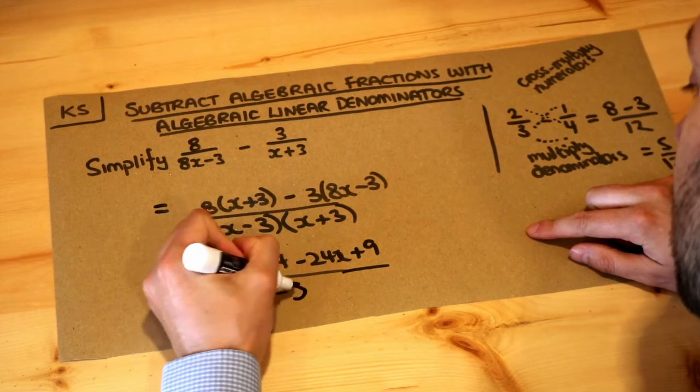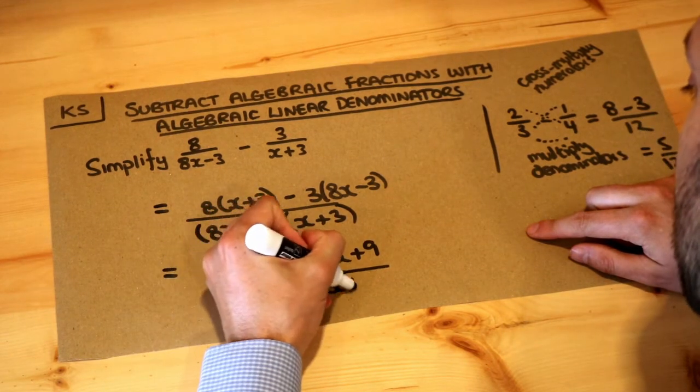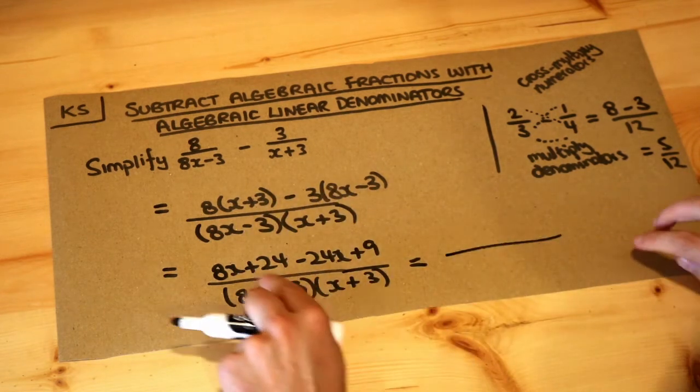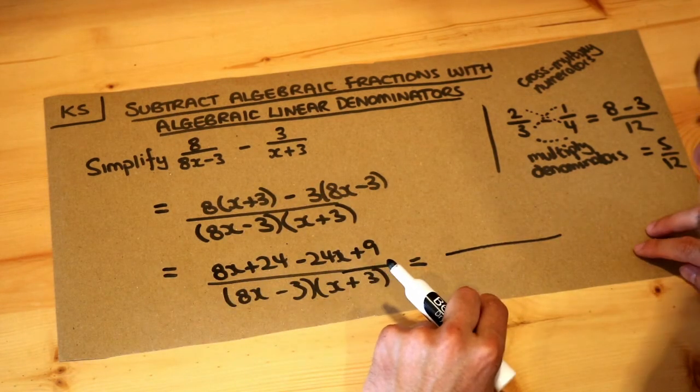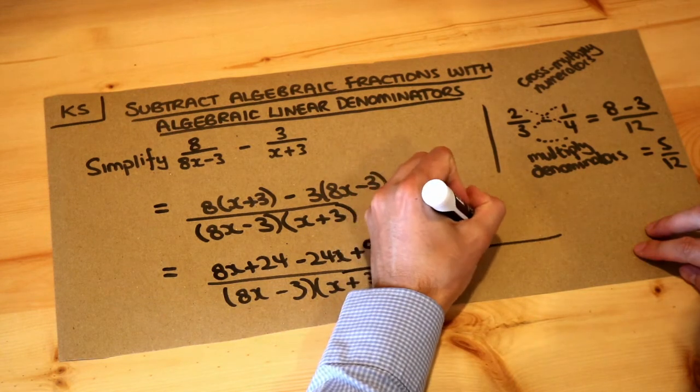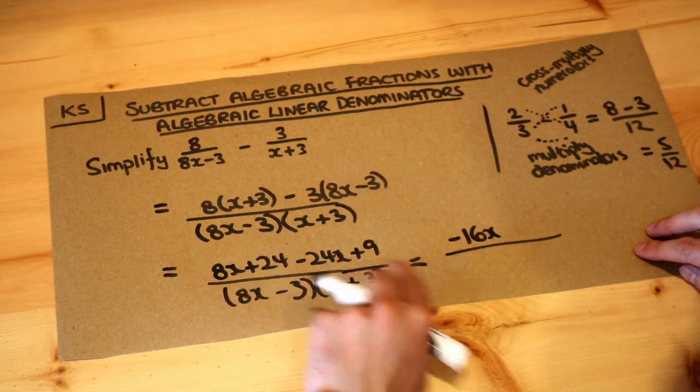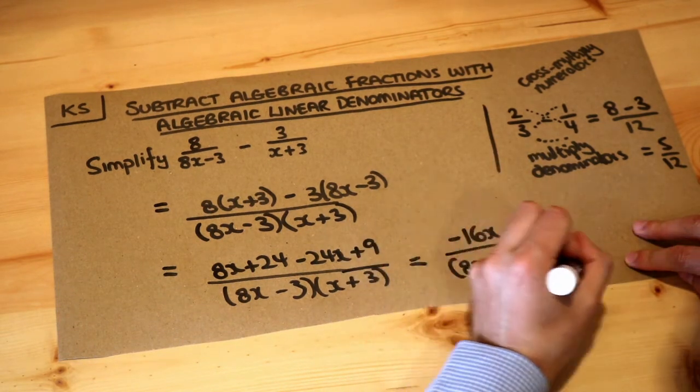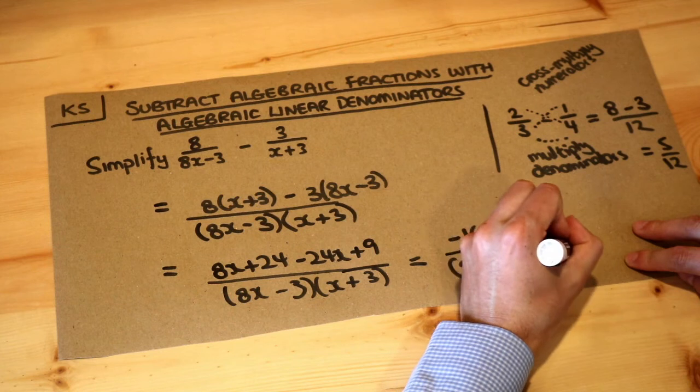And I'm going to leave this factorized. You don't get any extra credit for expanding this out. But we can collect like terms in the numerator. So 8x minus 24x is minus 16x. And 24 plus nine is 33. And that if we write in the denominator is the final answer.